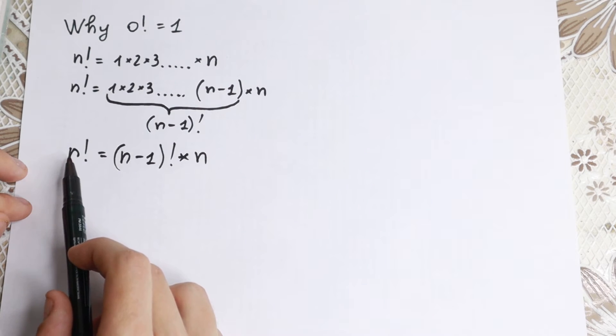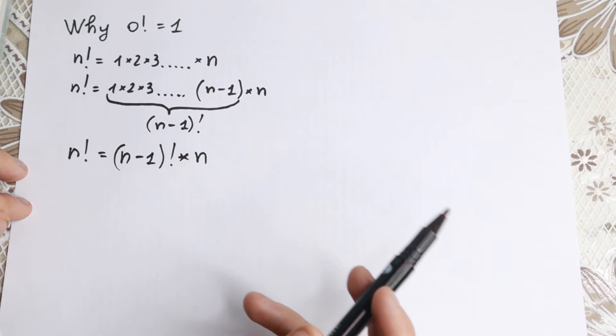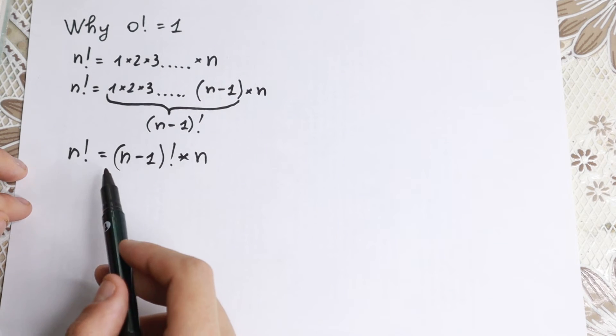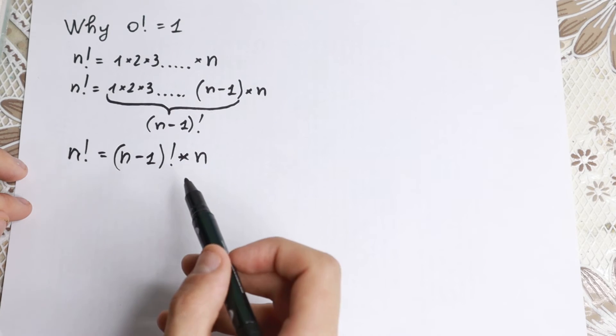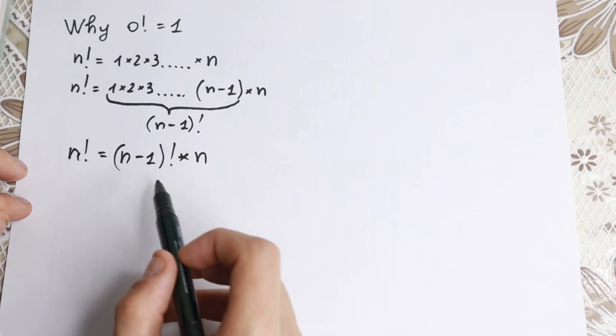For example, if we have 5 factorial, 5 factorial equal to 4 factorial times 5. It works every time. And you, of course, you know this formula. You can find this formula in every math class if you're talking about factorial.